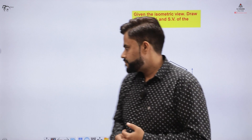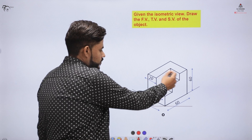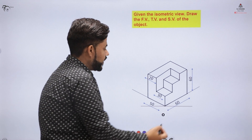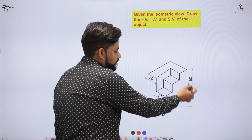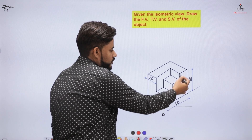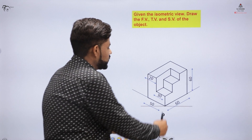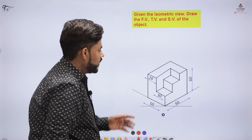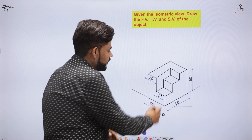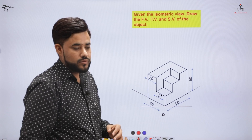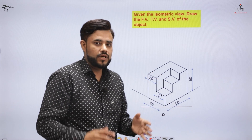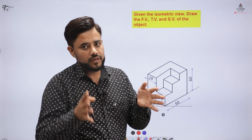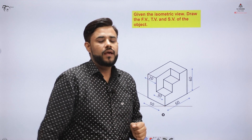Let us start the concept. Here you can see a complex object of size 60 by 60. If I look at the object from the front, I may get this part as my front view because the other part would remain hidden. When I look at the object from the top, I would get these steps shown to me. As per the concept, the steps in the horizontal fashion are then rotated 90 degrees clockwise.